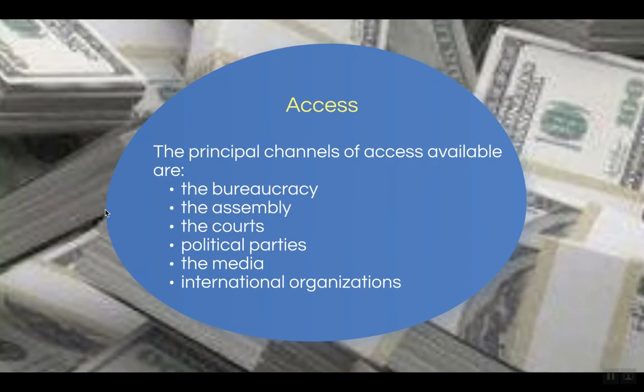Now let's talk about access. When we think about what interest groups desire, they need to be able to coordinate efforts with people who have an instrumental role in government — having access to members of the bureaucracy, the legislative branch, or a specific congressperson. You would want access to the courts, meaning attorneys who know how to get your way in court. You would also want access to the leadership of a specific political party, so you can move the needle on what the party wants to accomplish.